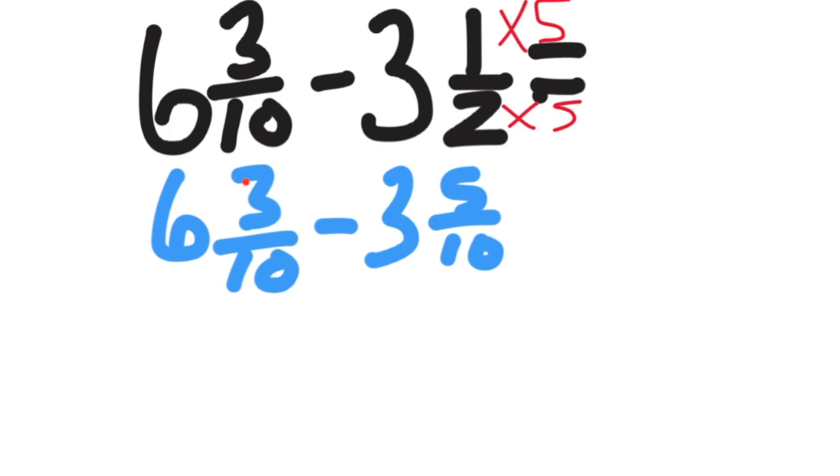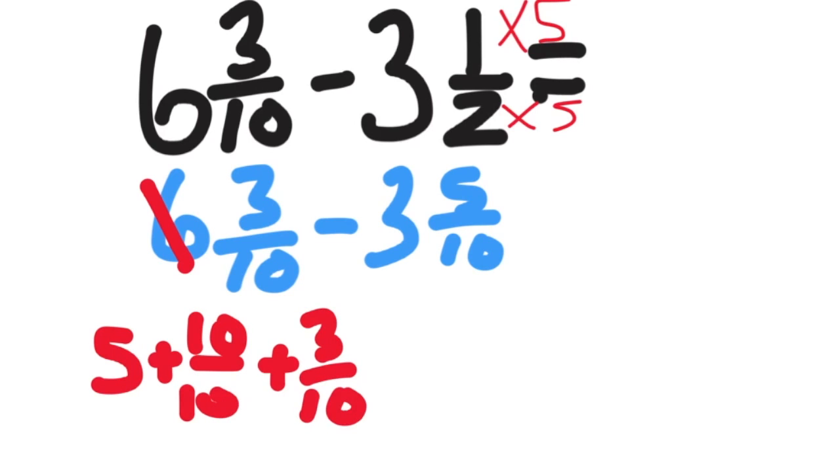Again, 3 tenths minus 5 tenths is going to give us a negative, so we need to borrow again. We take from the 6 and that becomes 5, and then we make 10 tenths out of the one that we just borrowed, and then we have the 3 tenths still. And then we take away the 3 and 5 tenths.